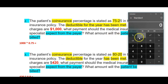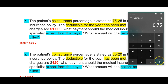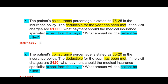We need to take $1,000 and multiply that by 75%. To do that, we take that times 0.75. That gives us $750. So $750 is 75% of $1,000 — you probably could have done that in your head. So $750 is what the payer, the insurance company, will pay. And $1,000 minus $750 equals $250 is what the patient pays. That's how that's figured out.